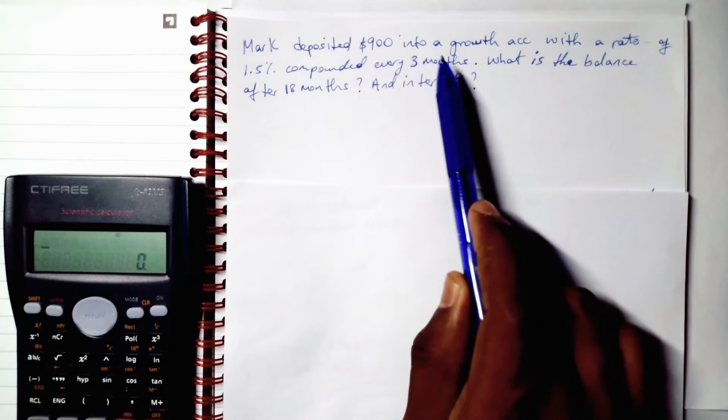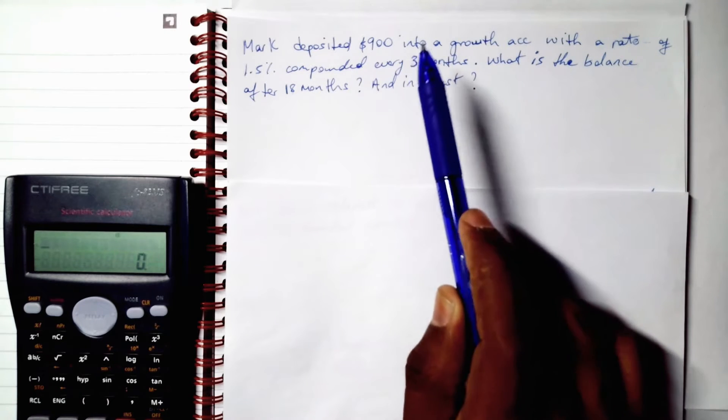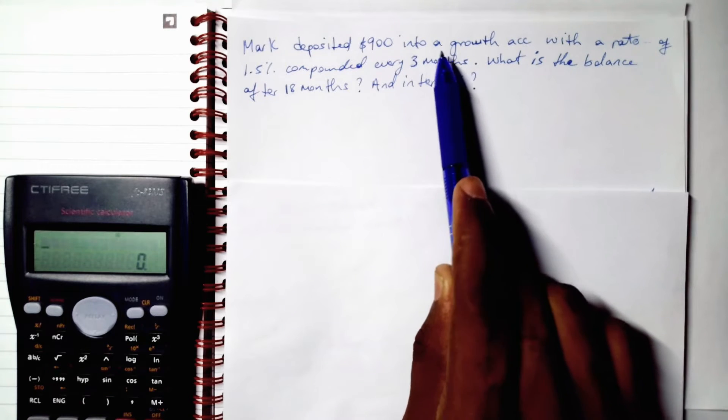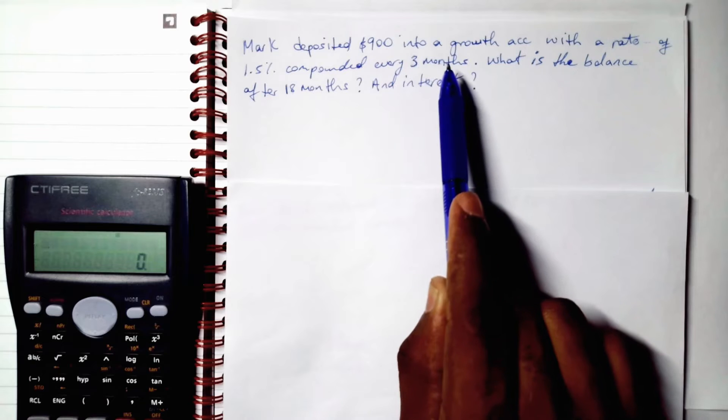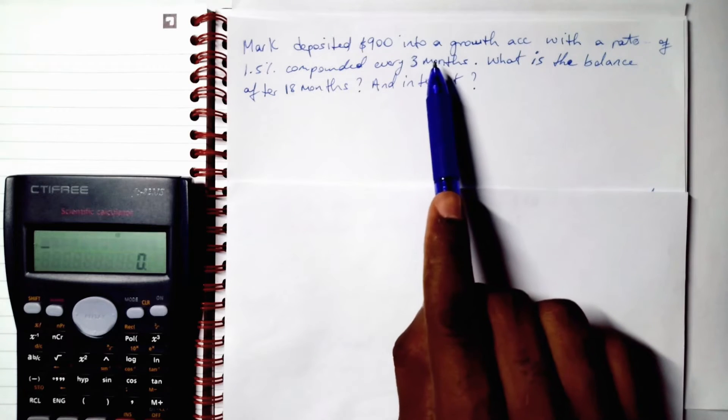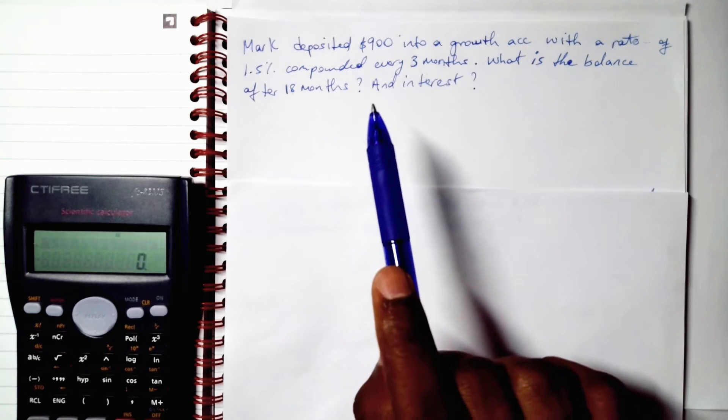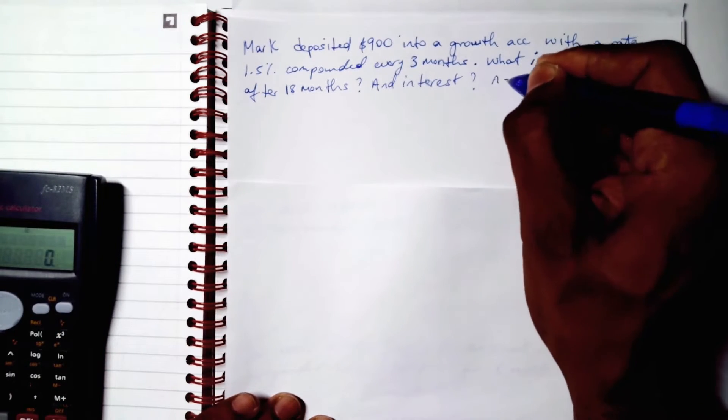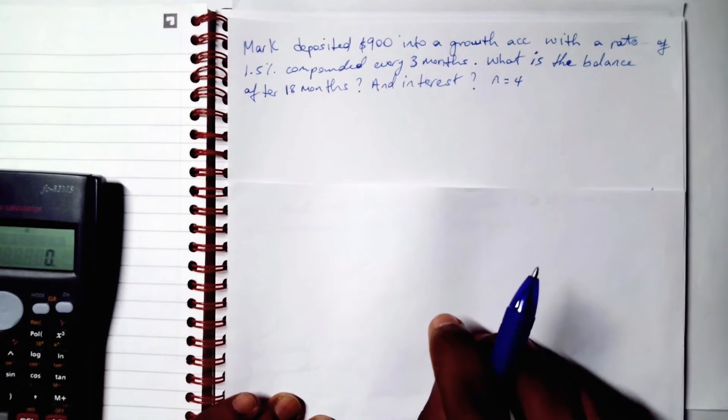The interest compounds quarterly. Our n will be four because there are four three months in a year. Four three months in a year. Cool. So our n will be four. Make a note of that.